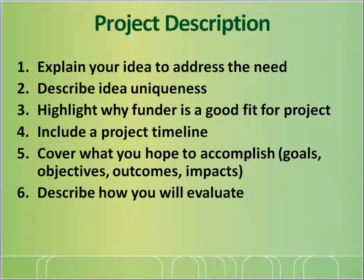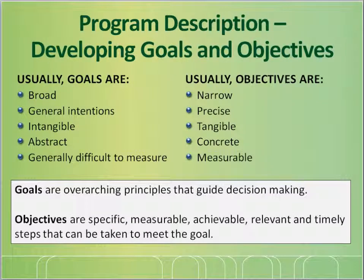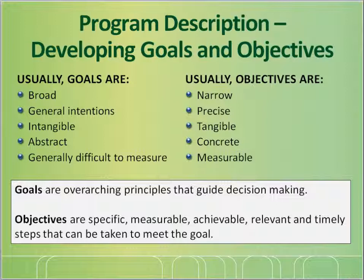For most Extension educational programs, we evaluate to determine if our goals and objectives, or expected outcomes, have been achieved. We assess what participants gain, or how they change, or what is different during and after project activities are implemented. In your program description, you would include developing goals and objectives. Goals are broad, have general intentions, are somewhat intangible and abstract, and generally difficult to measure. Objectives, conversely, are very narrow and precise — tangible, concrete, and most importantly, measurable. Goals are overarching principles that guide our decision making. Objectives are specific, measurable, achievable, relevant, and timely steps that can be taken to meet the goal.